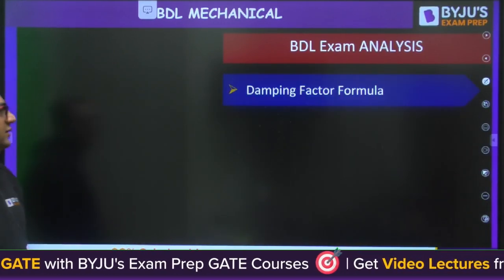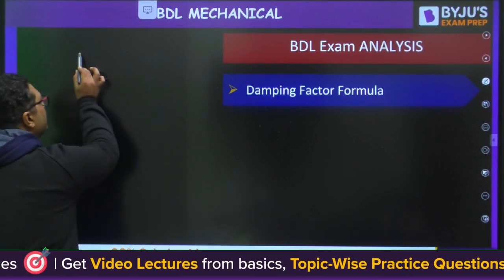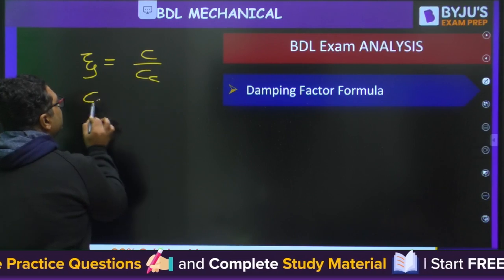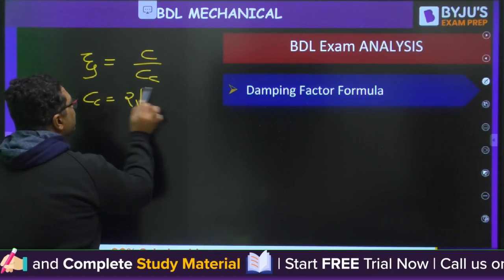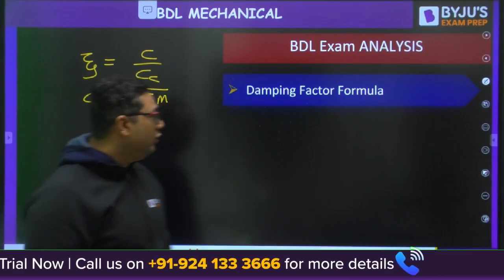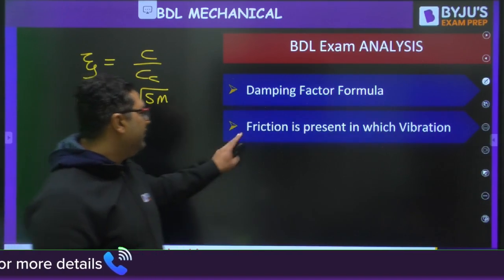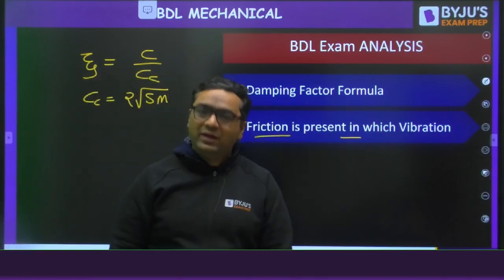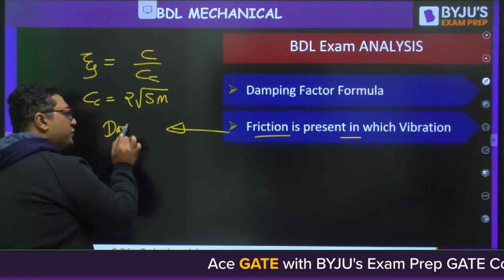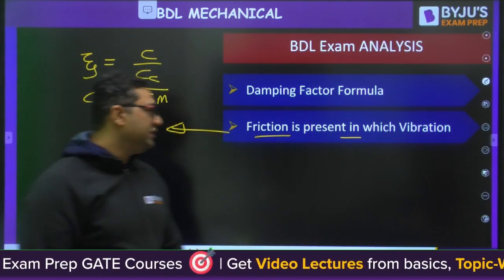Next is the damping factor formula: zeta is the damping factor, equal to C divided by CC, where CC equals 2 times the square root of S times M. A question asked for this formula directly. Another question asked which type of vibration has friction present — the answer is damped vibration.